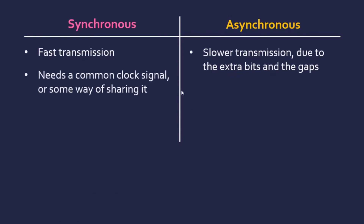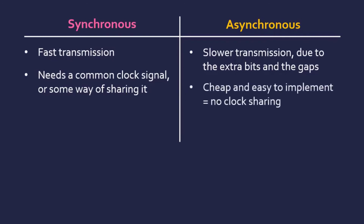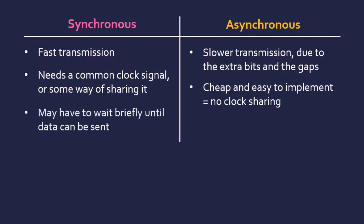So synchronous is usually faster. However, synchronous does need a common clock signal. Within a single device where a clock goes to all components that's quite simple, but with two separate devices, sharing a common clock signal is not easy — which is why asynchronous may be better in that case; it's cheaper and easier to implement. For synchronous, you may also have to wait briefly for the clock to return to the position at which you're allowed to send data. That delay may build up over multiple messages, yet it is still faster overall. Asynchronous, by contrast, can transmit whenever you're ready — you just send whenever you want.